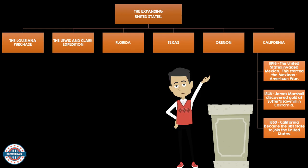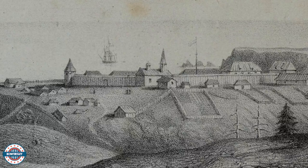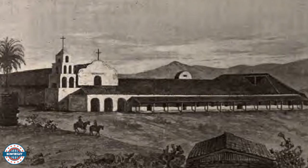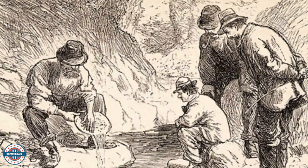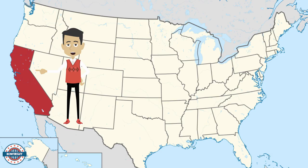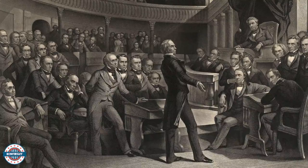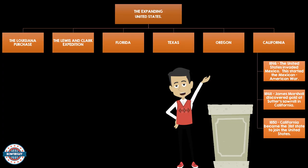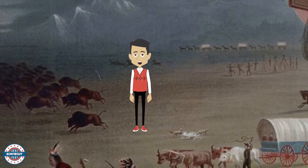How did California join the United States? In 1846, the United States invaded Mexico. This started the Mexican-American War. As a result of the United States winning the war, they gained California. In 1848, James Marshall discovered gold at Sutter's Sawmill in California. In 1850, California became the 31st state of the Union.